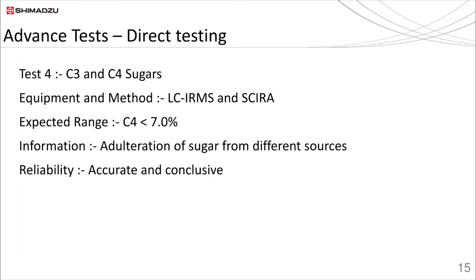Honey contains sugars generally from the C3 plant pathway. Measurement of C3 and C4 sugar percentages in honey can give a better picture of possible adulteration. The best way of measuring C3 and C4 sugars in honey is by using LC-IRMS (isotope ratio mass spectrometry). This technique can detect C4 sugars like corn sugars or cane sugars — pure honey should not contain C4 sugars more than 7% as per regulations. However, this method has drawbacks: high instrumentation cost, and it can give false negative results when added sugars come from C3 pathway plants like sugar beet or rice syrup.